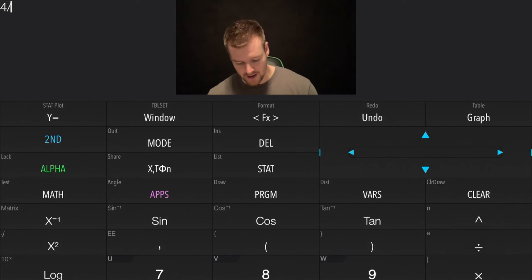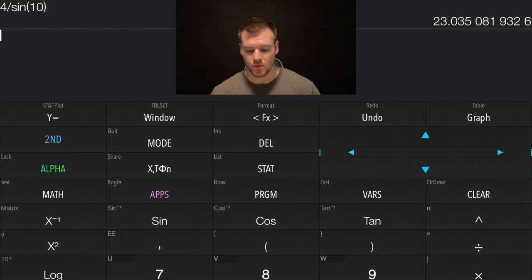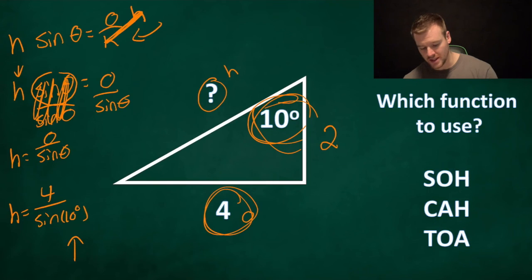Let's go 4 divided by sine of 10. We close the bracket, press equal, and we get 23.035. So 23. So I'll fill that in here, 23 for the length of this side.